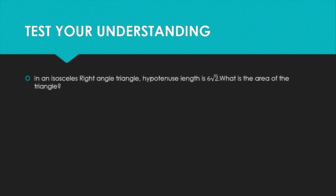Next problem: In an isosceles right angle triangle, the hypotenuse length is 600√2. Isosceles means two sides are equal. This is a right angle triangle with two equal sides — the base and the height — and the hypotenuse is 600√2, which is the side opposite the 90-degree angle. Let both equal sides be X. Using the Pythagorean theorem: hypotenuse squared equals base squared plus perpendicular squared.